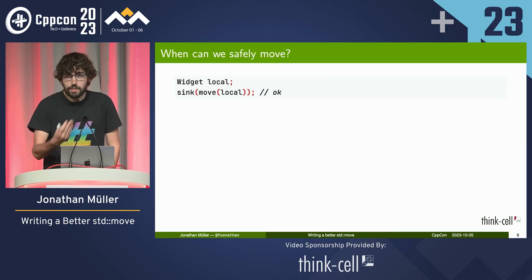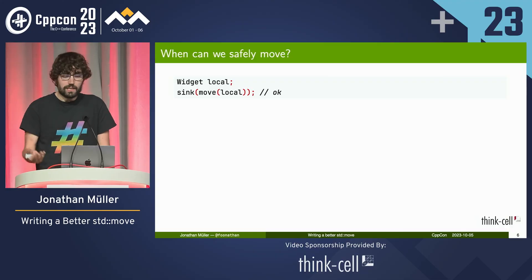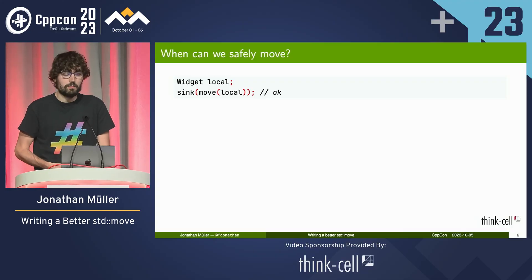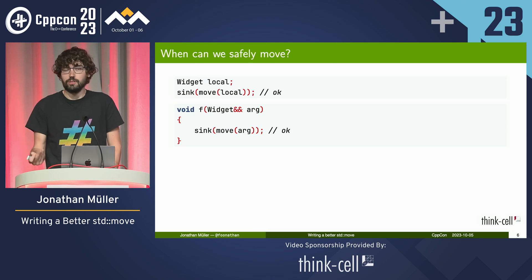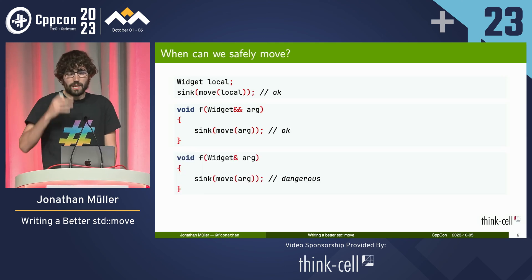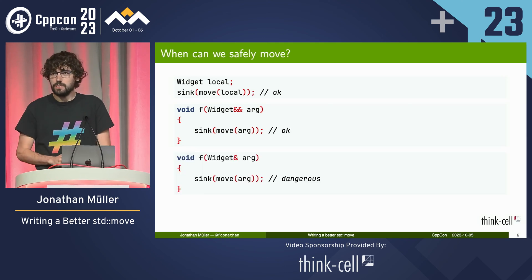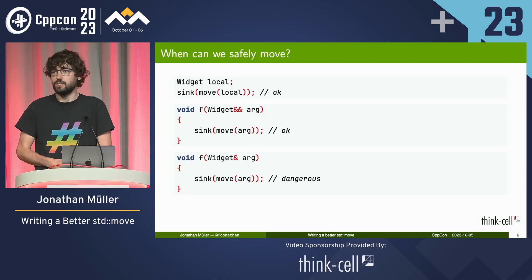When we have a local variable, we should be allowed to move it — that's fine. Likewise, if you have an R-value argument, that's also fine, since the caller has yielded ownership and we are allowed to move it further. But if you have an L-value argument, that is potentially dangerous, and should require a special opt-in. We can only safely move if you have ownership.